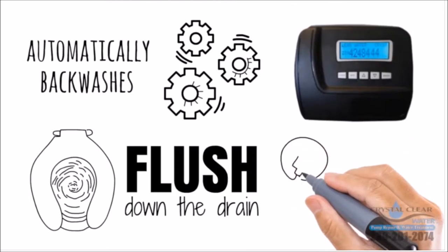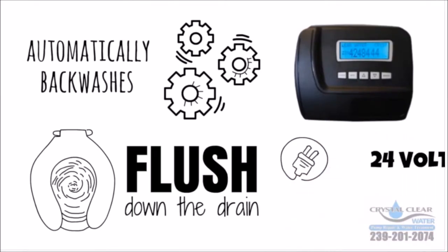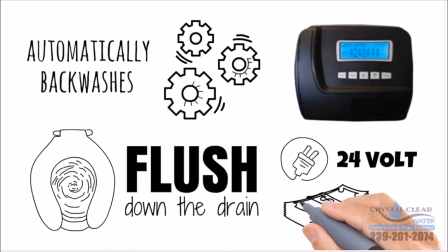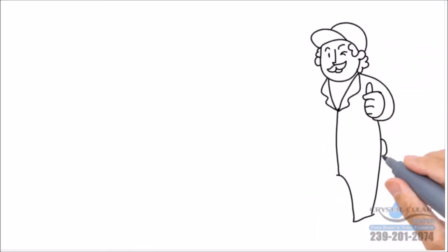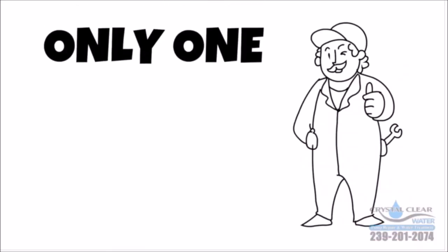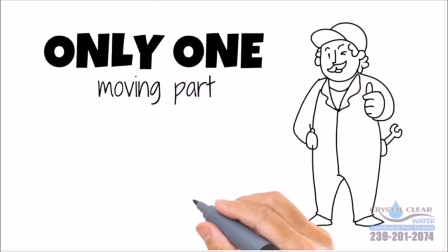The Gen 5 features a digital LCD display, a built-in bypass valve, and a 24-volt electric system that uses less than three dollars a year. It's the simplest system to service in the industry, with only one moving part and a valve that is easily removed.